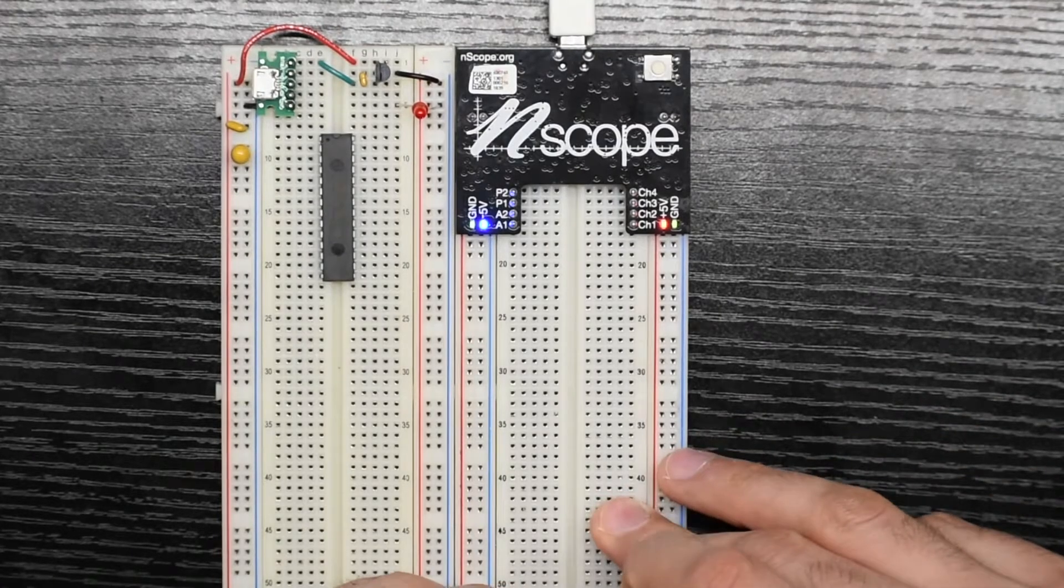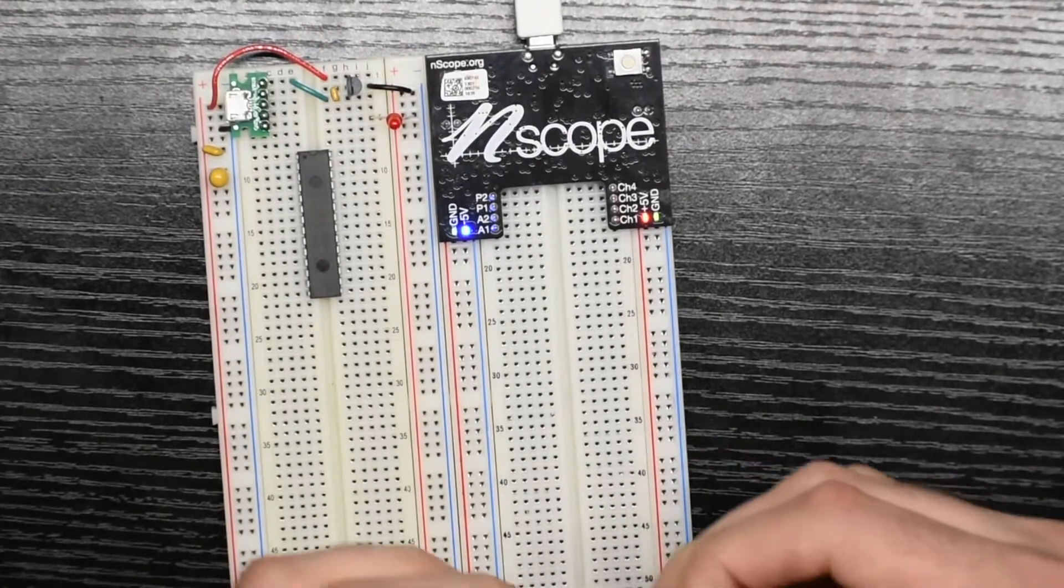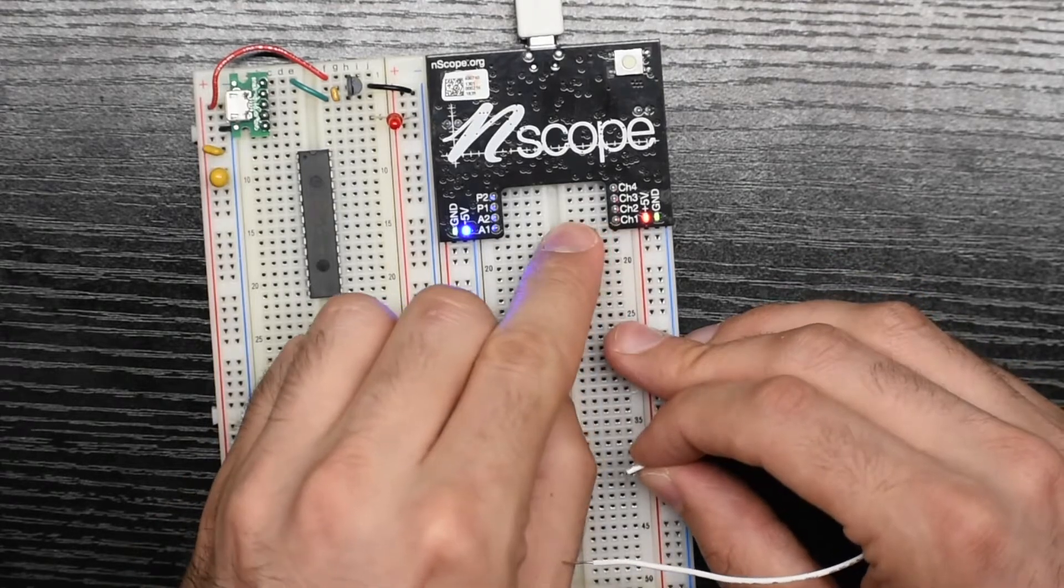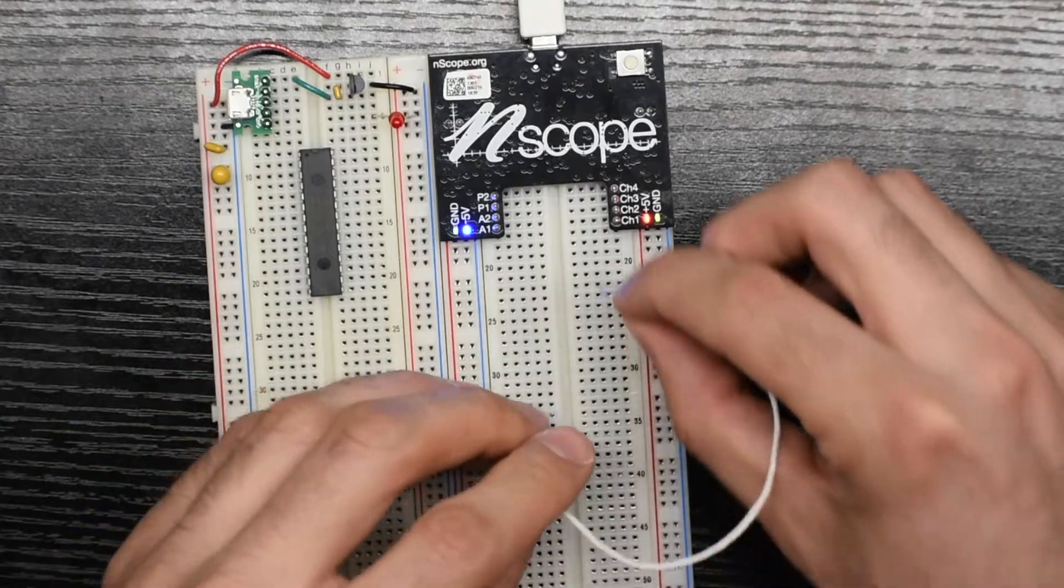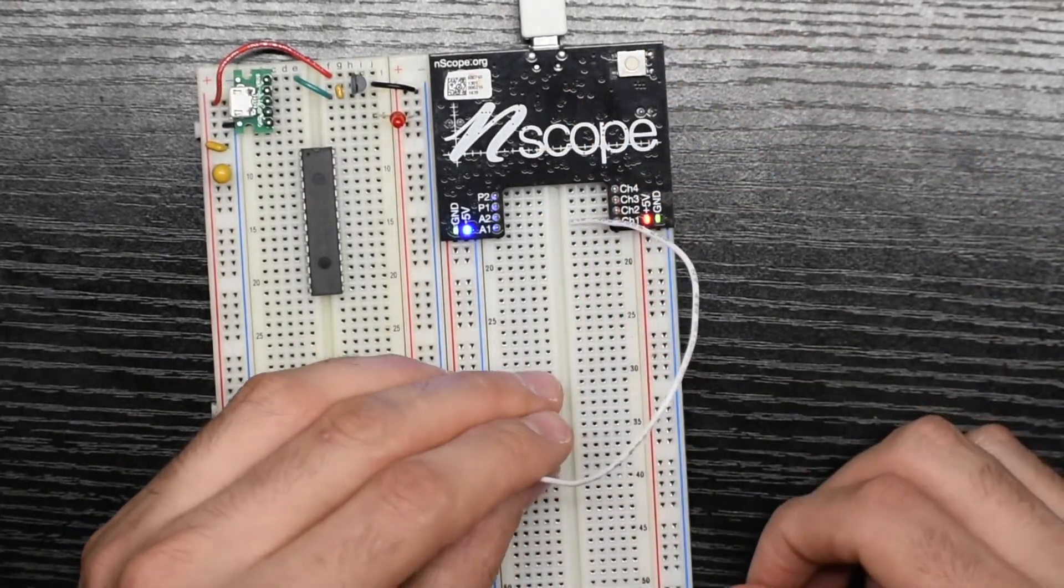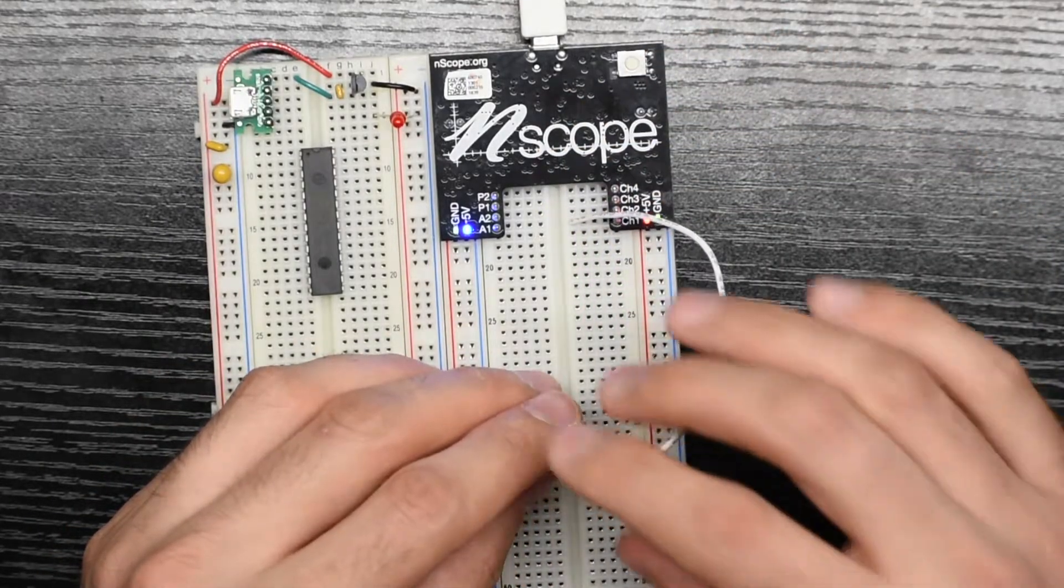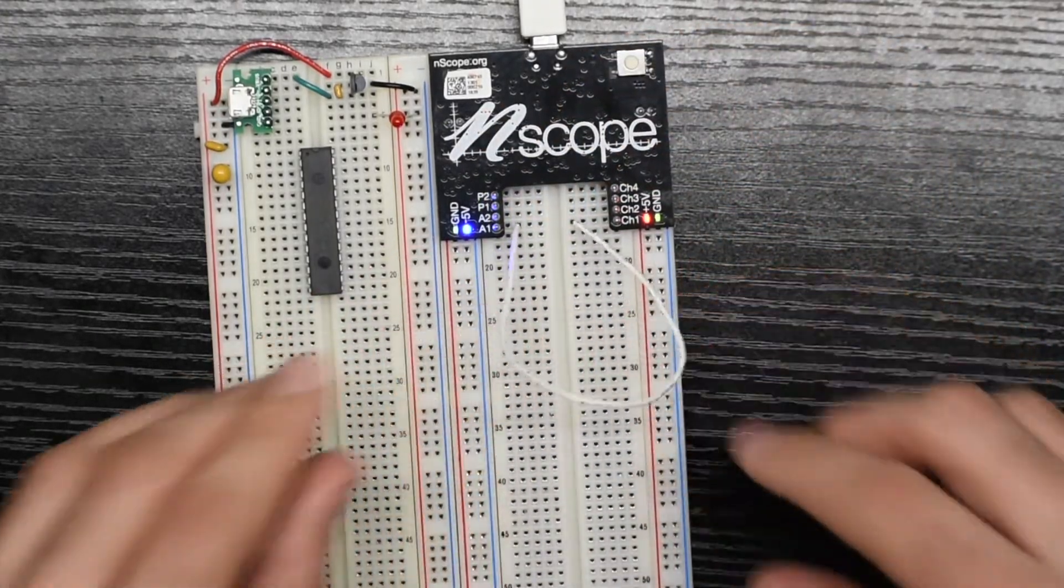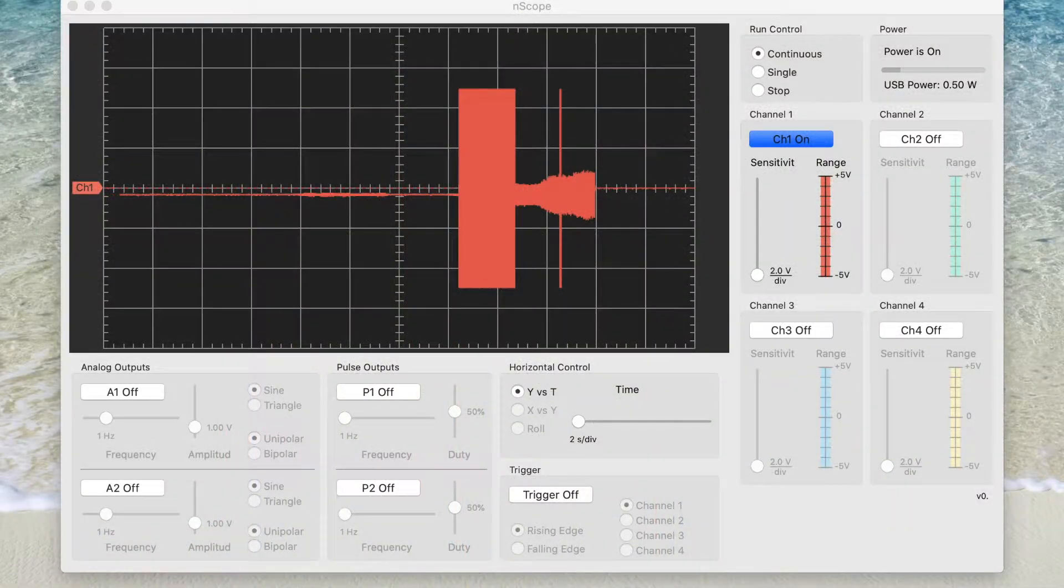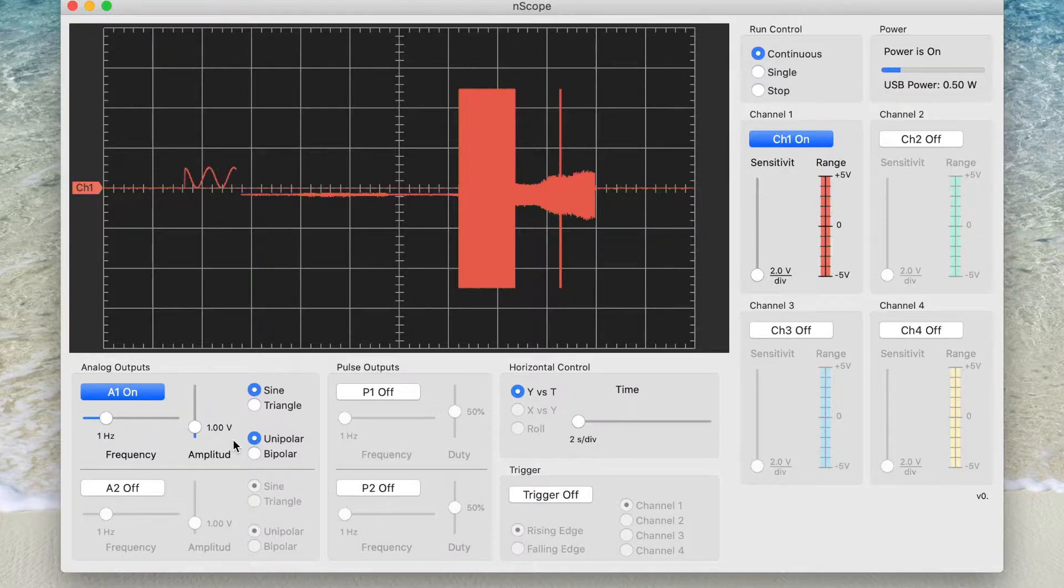And the way the pins work is rather than having probes like a traditional oscilloscope, we have holes in the breadboard that the channels are plugged into. So if I wanted to see voltage on channel one, I would plug into the row that is channel one. And in this case, maybe I'll make a voltage on A1. So I'll plug into A1, and then I'll be able to see it. I could go into settings, and I can turn A1 on, and I can have a one hertz, bipolar, 4.75 volt sine wave.